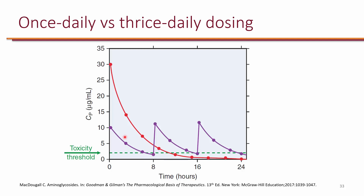When you look at these purple lines, you can see that the majority of the time the levels are actually in the toxic range, with only a very short period where the kidneys get a break. This is a safety concern. Also keep in mind that aminoglycosides have a post-antibiotic effect, meaning that once the level goes below the MIC, the antibiotic continues to kill for up to 7 or 8 hours — and we can take advantage of that.